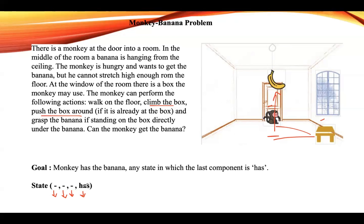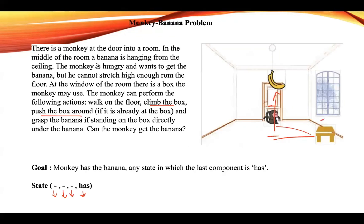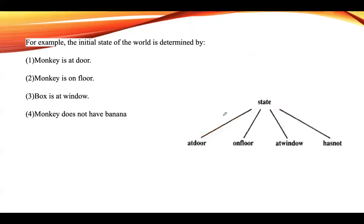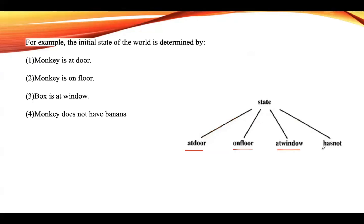The states can be represented as: horizontal position of the monkey, vertical position of the monkey, position of the box, and whether the monkey has or has not the banana. The initial state is: monkey is at the door, monkey is on the floor, box is at the window, and monkey does not have the banana. So the state is represented with four components: at door, on floor, at window, and has not.